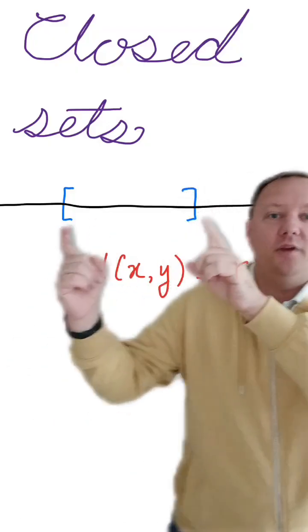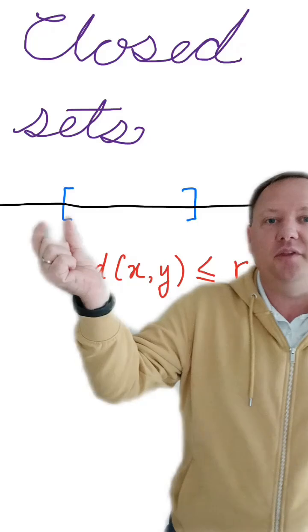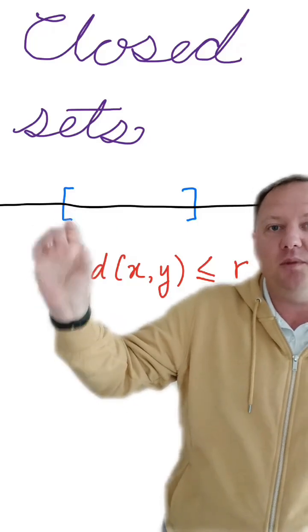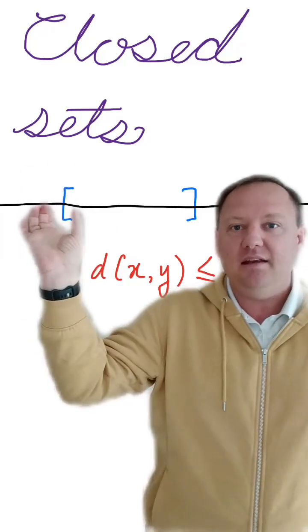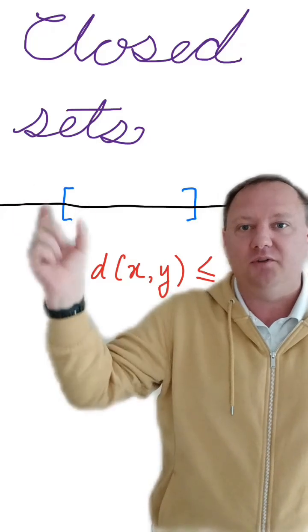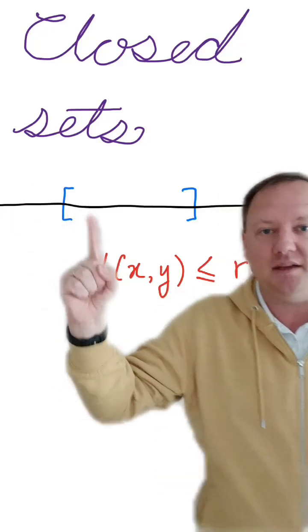If we think of the real numbers with this closed interval, then this endpoint of the interval would be an accumulation point because if you take any neighborhood of that closed interval, there will always be a point inside the set.